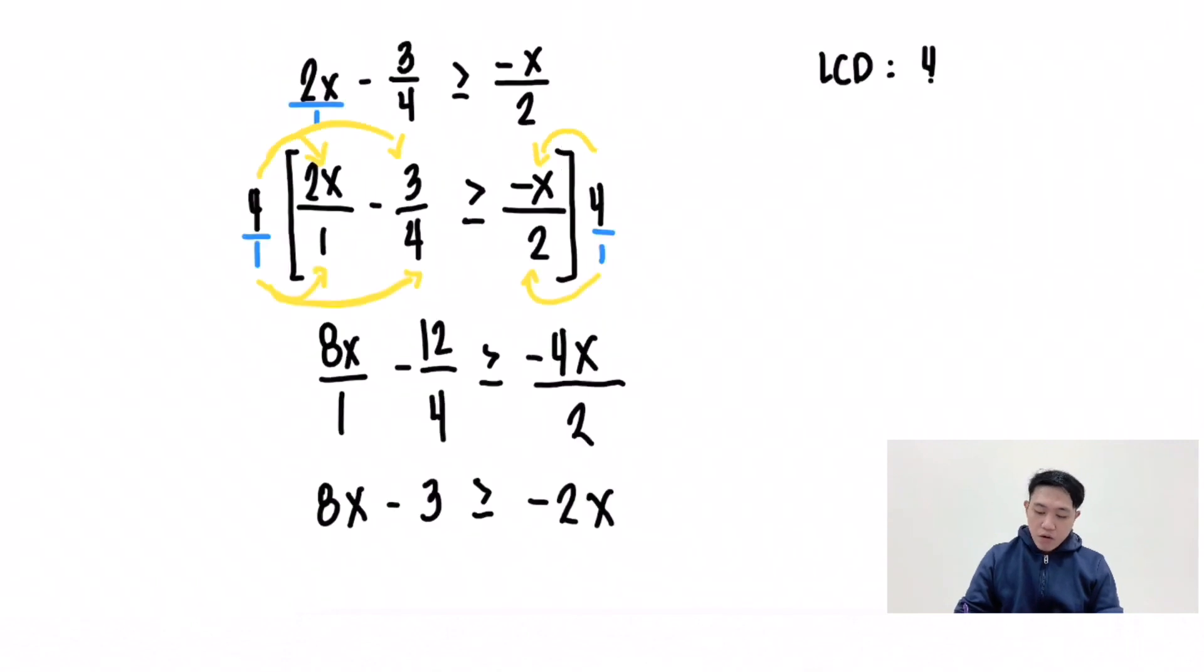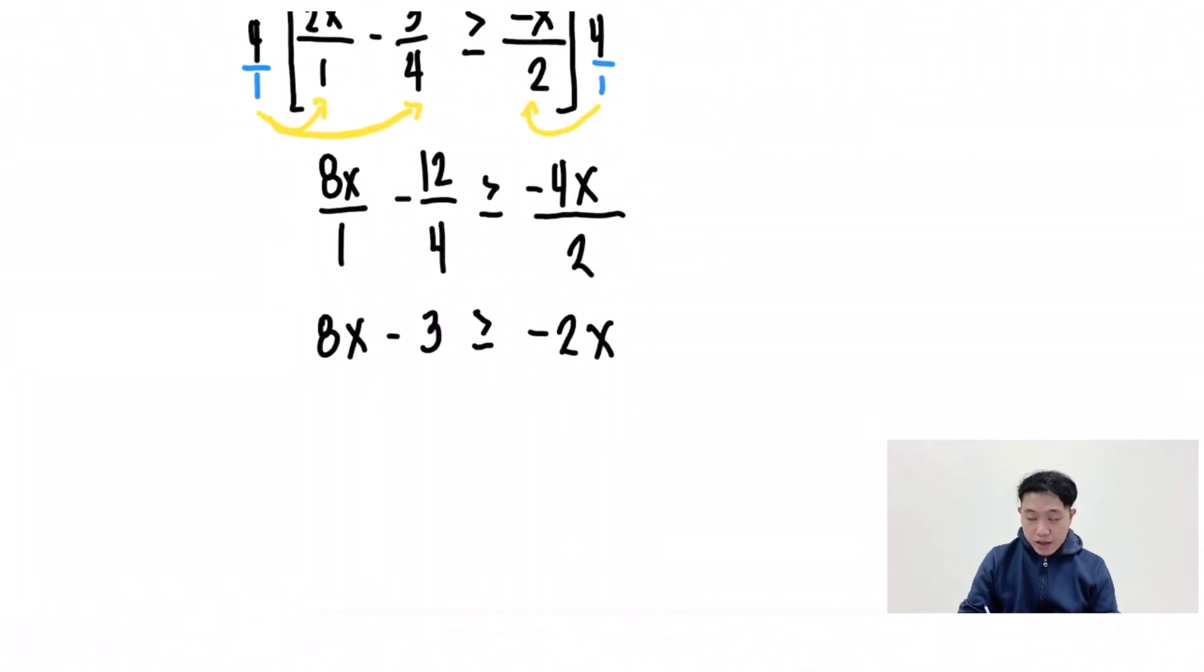Now, to combine 8x and negative 2x, apply the addition property of inequality. So 8x plus 2x minus 3 greater than or equal to negative 2x plus 2x. 8x plus 2x is 10x minus 3 greater than or equal to negative 2x plus 2x is 0.